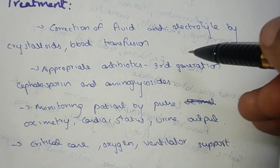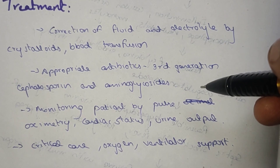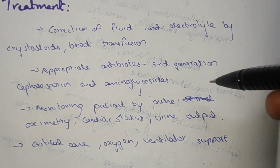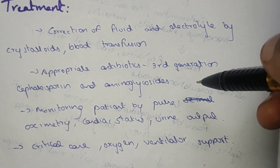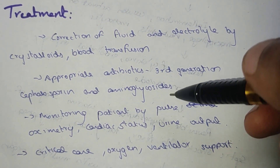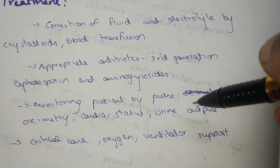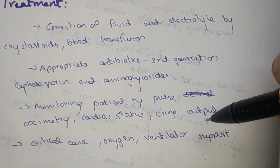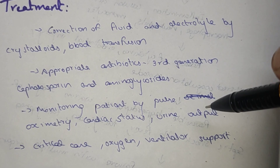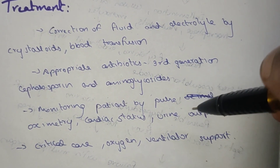Treatment involves correction of fluids and electrolytes using crystalloids and blood transfusion. Appropriate antibiotics include third-generation cephalosporins and aminoglycosides. Patient monitoring includes pulse oximetry, cardiac status, heart rate, and urine output.